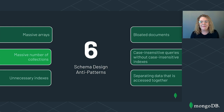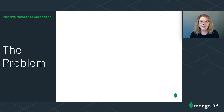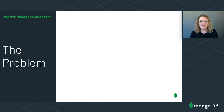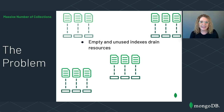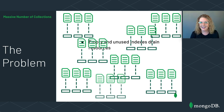We've discussed that massive arrays are bad — but what about having a massive number of collections? Turns out they're not particularly great either. Let's begin by discussing why having a massive number of collections is an anti-pattern. Empty and unused indexes drain resources. Every collection in MongoDB automatically has an index on the _id field, and while the size of this index is pretty small for empty or small collections, thousands of empty or unused indexes can begin to drain resources. Collections will typically have a few more indexes to support efficient queries — and all of these indexes add up.